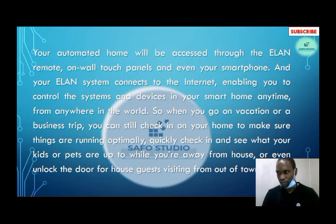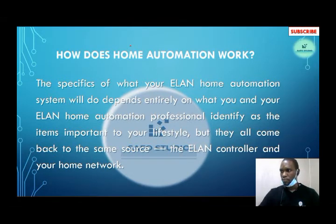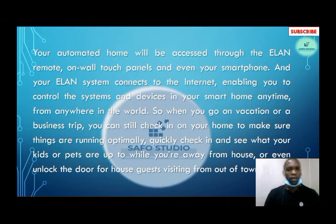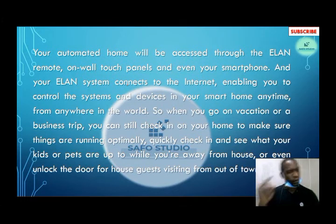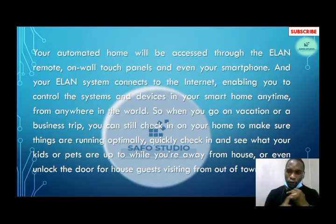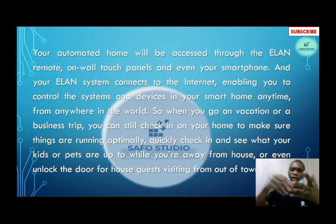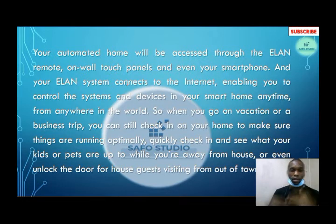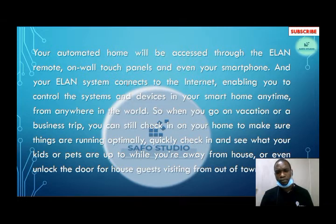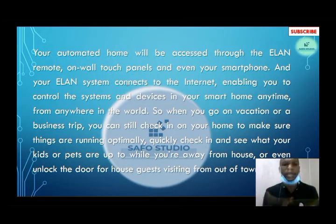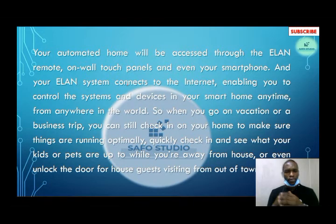Your automated home will be accessed through the Elan remote — and when I say Elan, I could also mean Control4 or RTI, as all three are controller systems. Think of it like laptop brands: HP, Compaq, Dell, Lenovo — they all do the same job. Elan, Control4, and RTI work the same way. Your automated home will be accessed through the Elan remote, wall touch panels, or your phone.